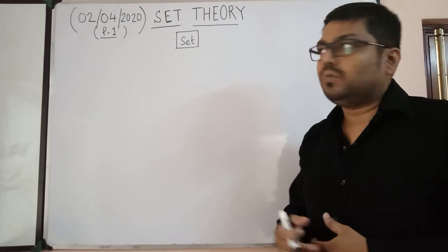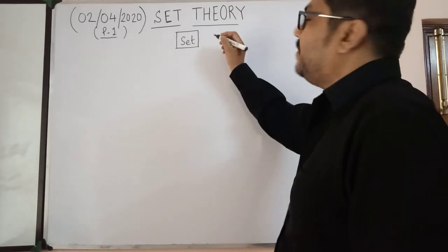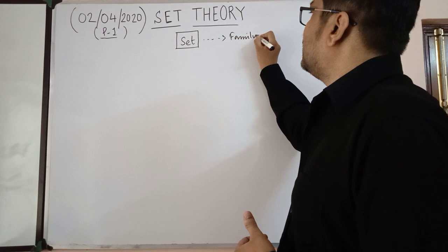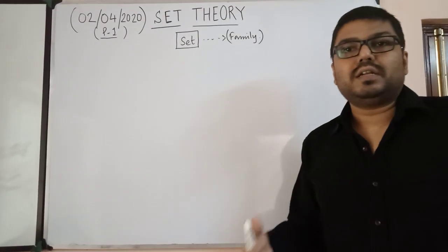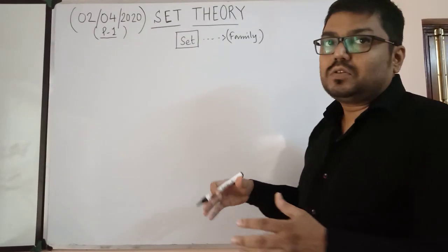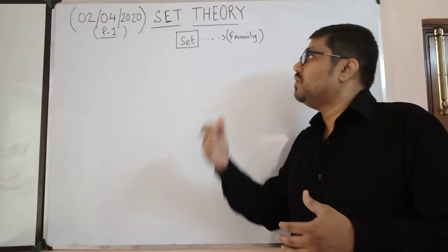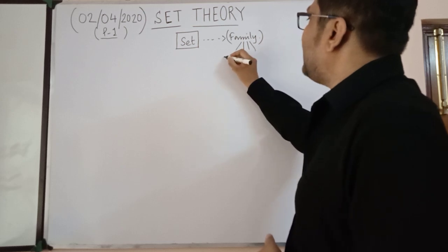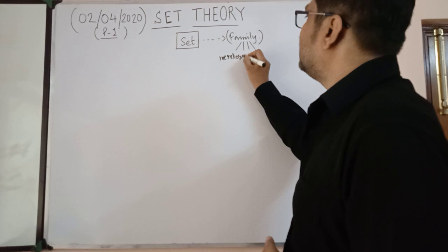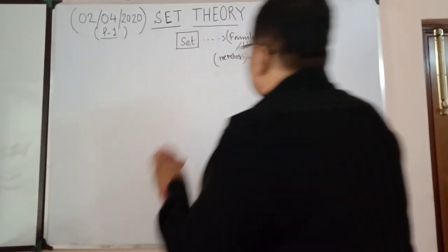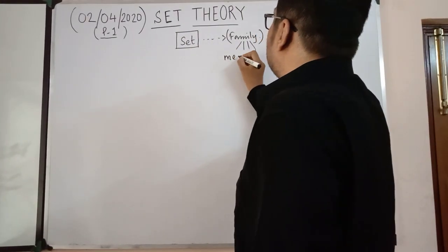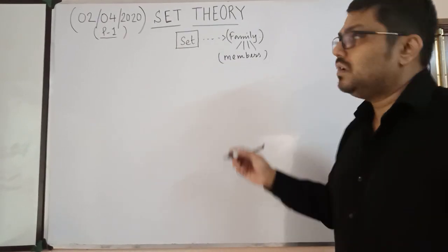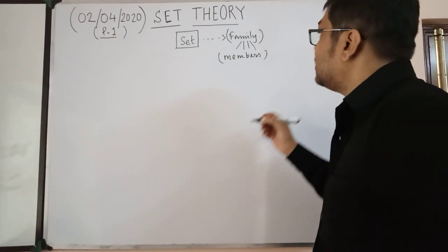Let us start Set Theory. What is a set? If you try to understand a set in simple English, it is actually a family — that is the mathematical name we give to it. If we want to denote a family in terms of mathematics, we call it a set. Just as a family has different members, a set also has different members, and we call these members elements.